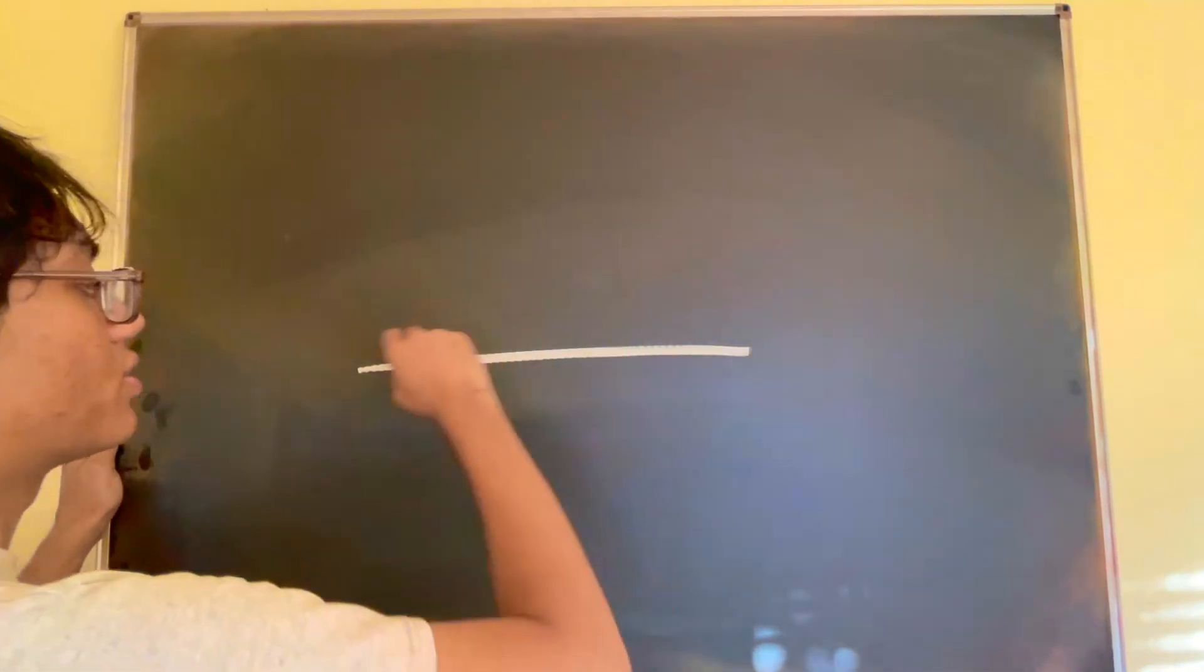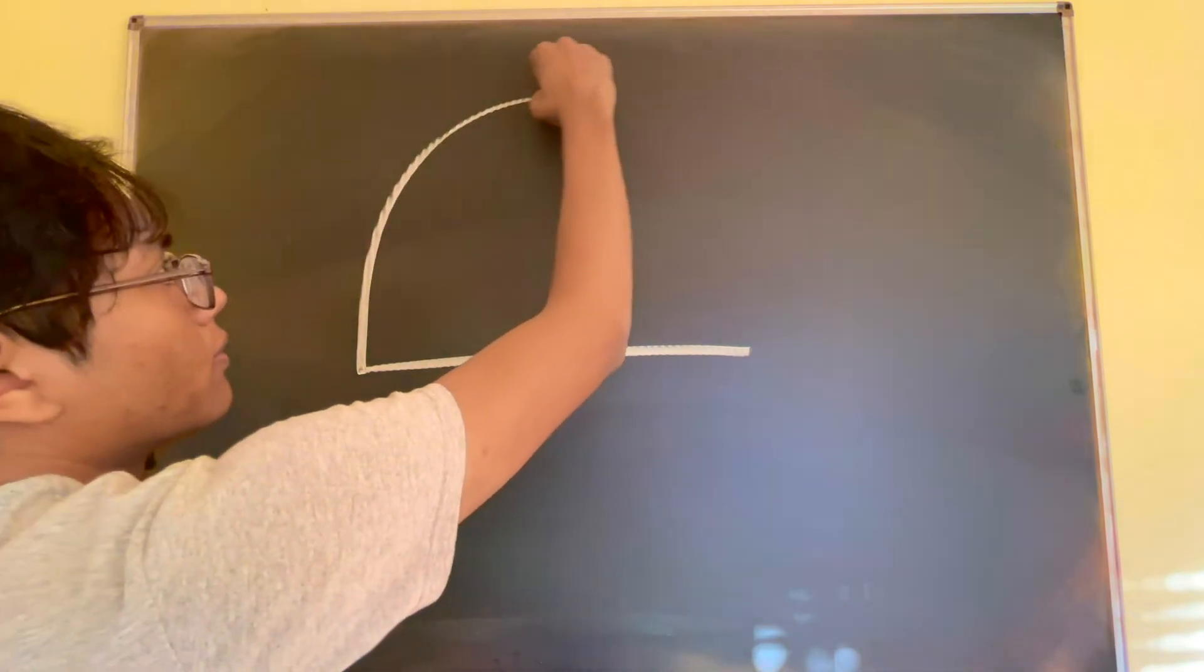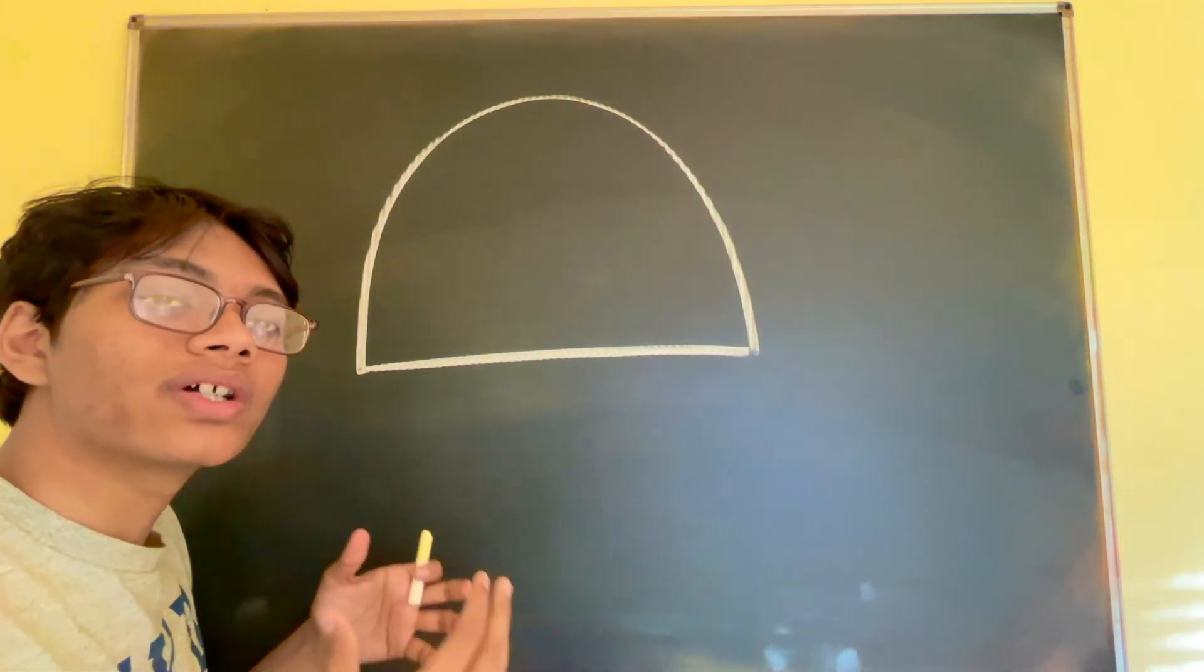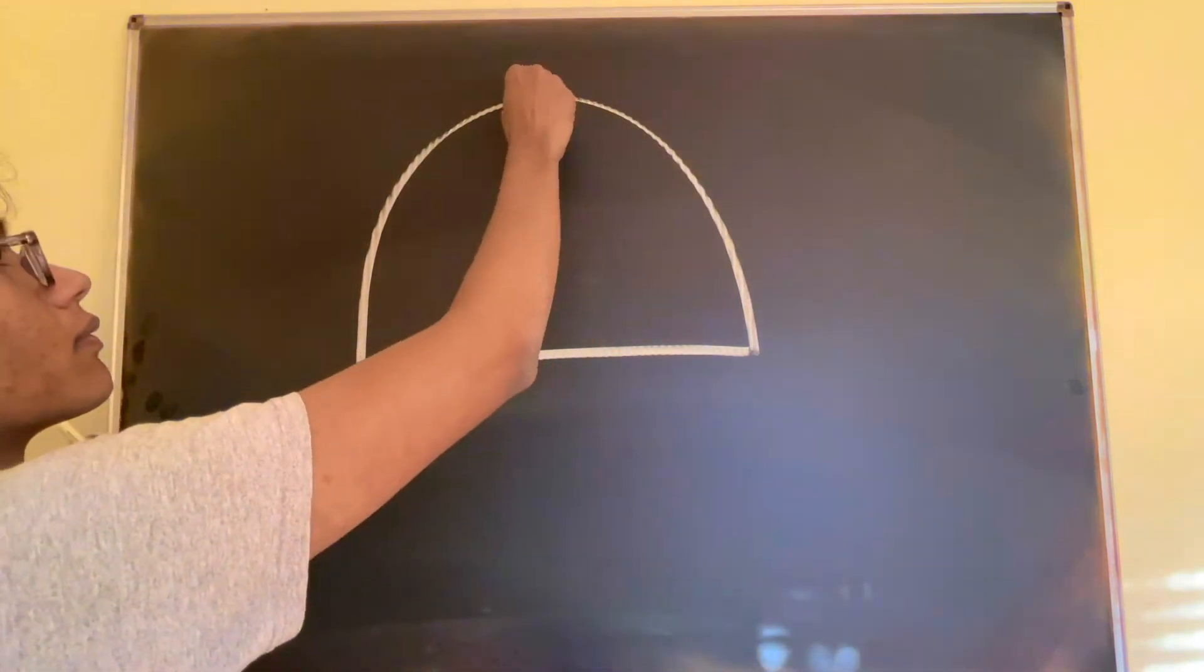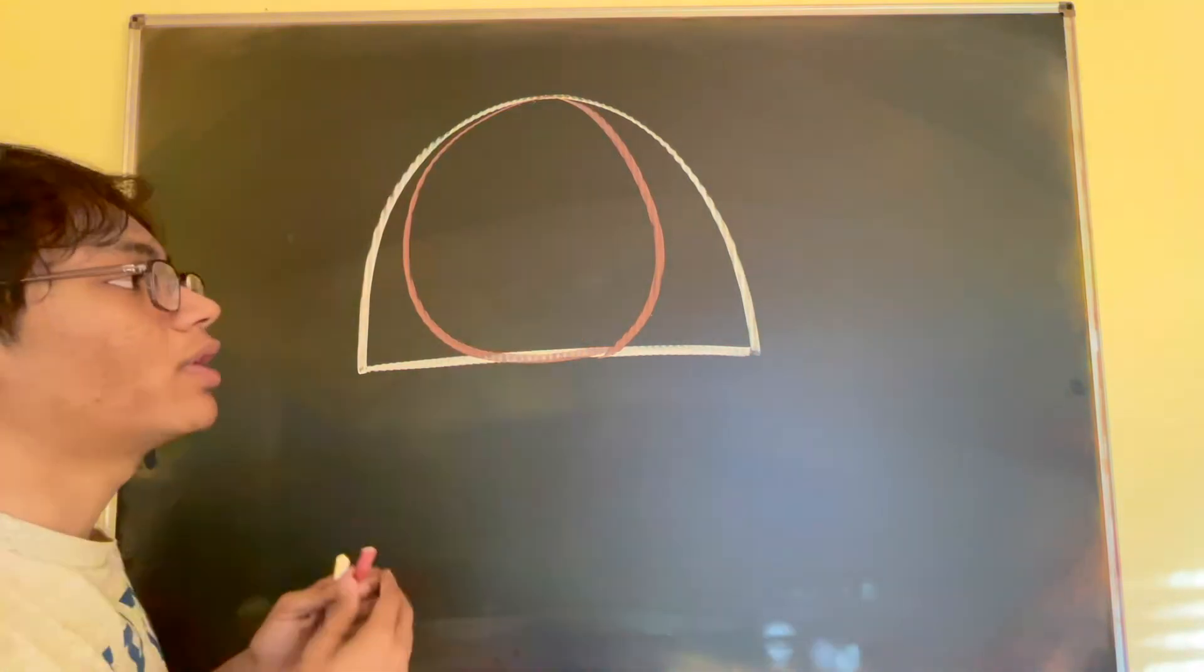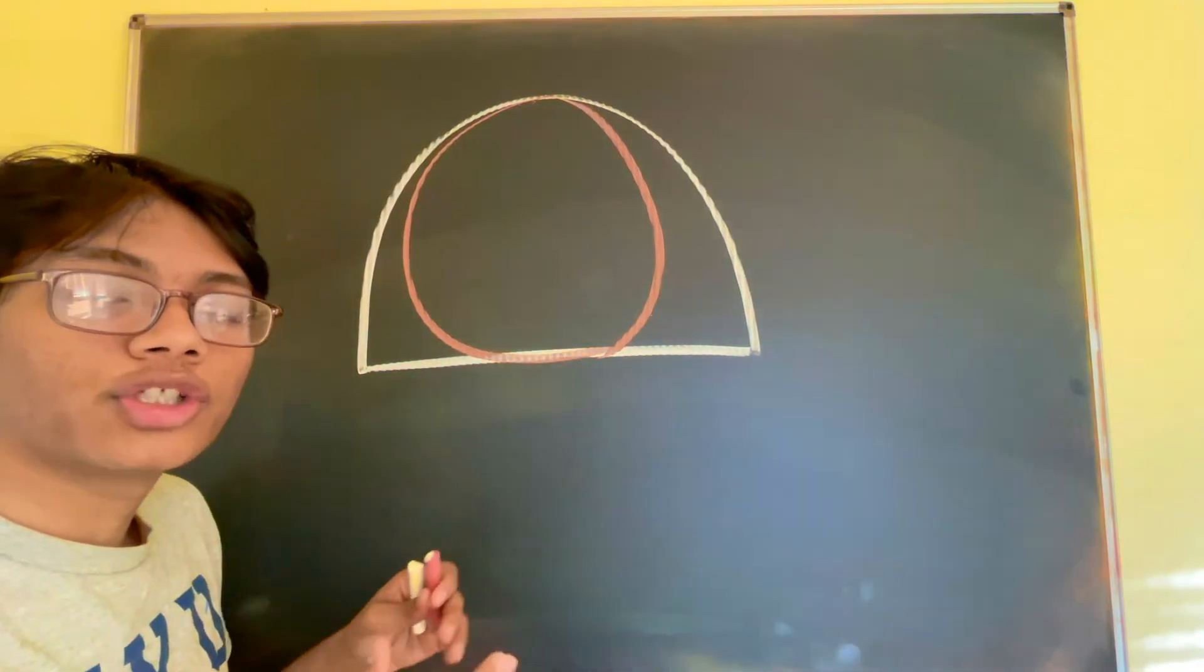Here's our problem for today. We've got this semicircle and within the semicircle we have a smaller circle. Now, between the semicircle and this brown circle there is a shaded area.